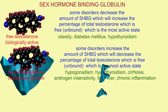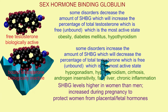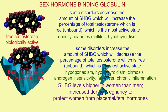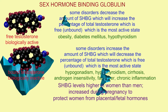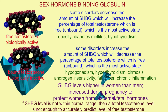Some disorders do the opposite, increasing the amount of SHBG and decreasing the amount of total testosterone which is free. These include hypogonadism, hyperthyroidism, cirrhosis of the liver, a fatty liver, androgen insensitivity, and chronic inflammation.